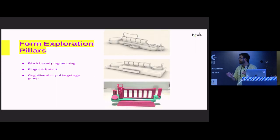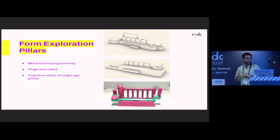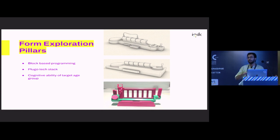Once we go through the process of breaking down the subject in terms of fundamental skills, we basically identified for coding that these were the four skills we wanted to address. After these steps, once we've identified the core fundamental thinking processes, we start the exciting stuff where you start designing forms. The main pillars for our design process was block-based programming, the Plugo tech stack limitations, and the cognitive ability of the target age group.